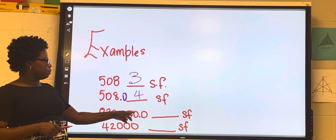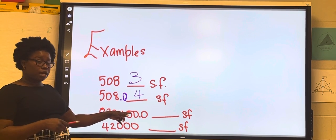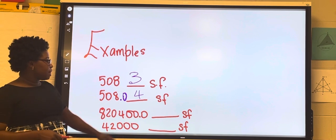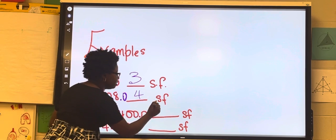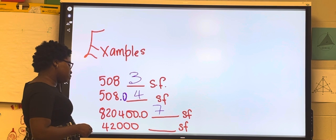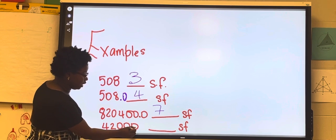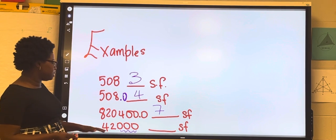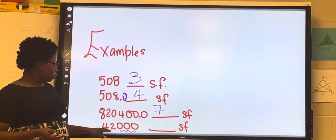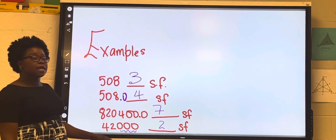For 820400.0, we count: one, two, in-between three, four, trailing five, six, and the zero after the decimal point is also significant — so that gives us seven significant figures. For 42000, we have four, two, zero, zero, zero. These trailing zeros have no visible decimal point, so we consider only the first two digits to be significant — this number has two significant figures.